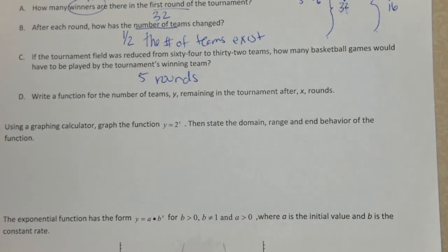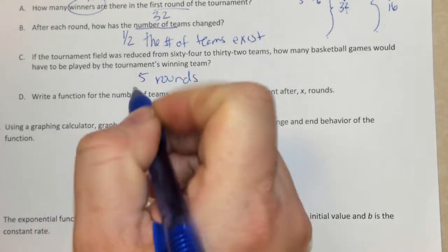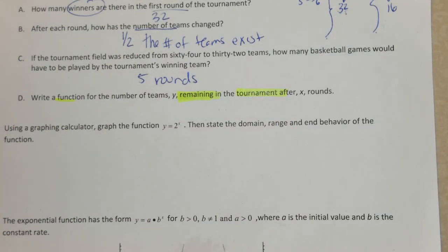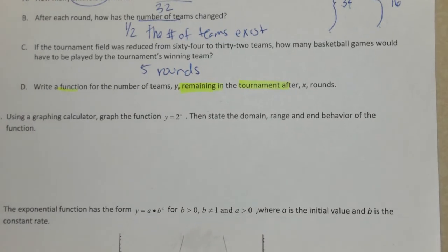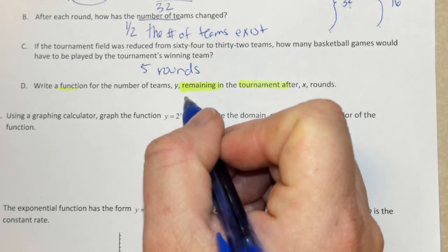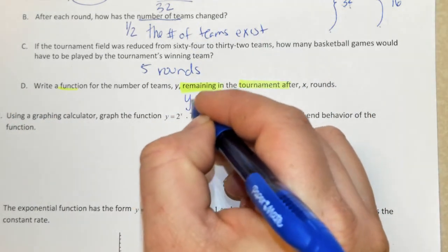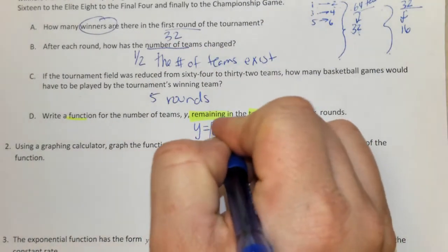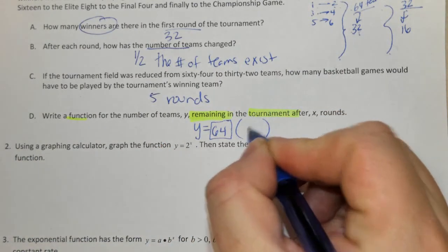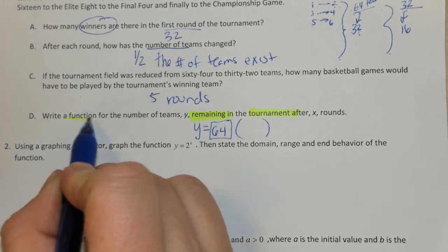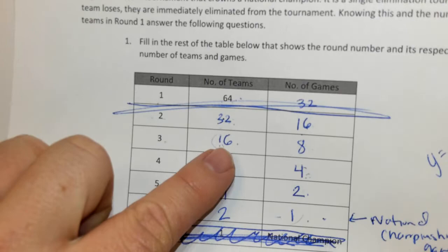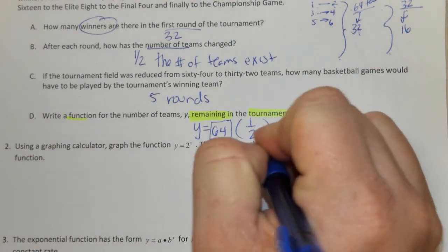Write a function for the number of teams remaining in the tournament after X rounds. Our function wants to represent the number of remaining teams in the tournament. The function is Y equals — and this first number represents your initial amount, so we're starting with 64 teams. Inside the parentheses will be the rate that goes from one round to the next, representing the number of teams. From one round to the next, the number of teams is cut in half. And now X is the exponent.